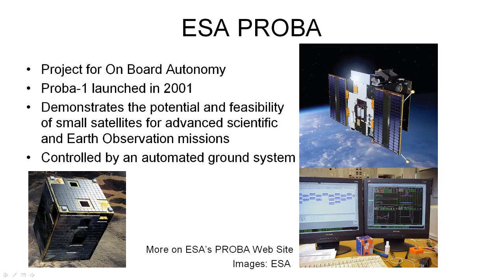ESA's project for onboard autonomy, PROBA, has had a series of spacecraft which have demonstrated the potential and feasibility of small satellites for advanced scientific and earth observation missions, and some have been controlled by automated ground systems.